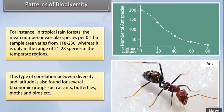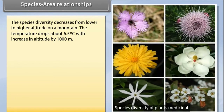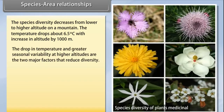Species diversity also decreases from lower to higher altitude on a mountain. The temperature drops about 6.5 degrees Celsius with an increase in altitude of 1,000 meters. The drop in temperature and greater seasonal variability at higher altitudes are the two major factors that reduce diversity.